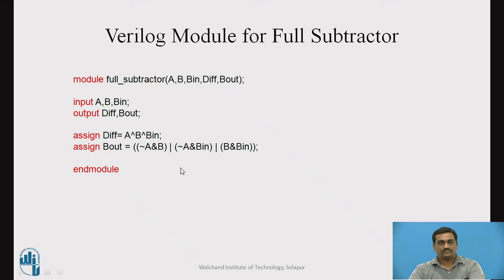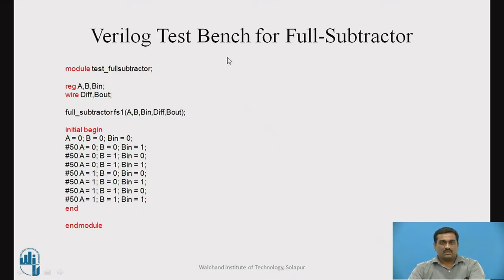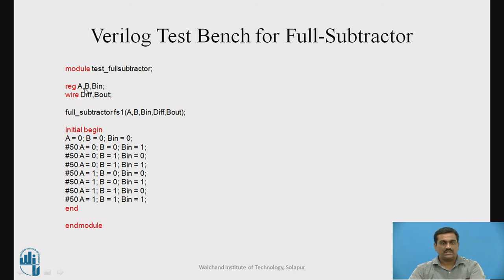This is the Verilog testbench for verifying the correctness of the full subtractor module. The testbench module is named test_full_subtractor. The inputs are defined as reg data type to store values, and the outputs are defined as wire data type. The next line instantiates the full subtractor module: full_subtractor fs1 is the name of the object, and the arguments A, B, BIn (inputs) and diff, BOut (outputs) are passed in the brackets.